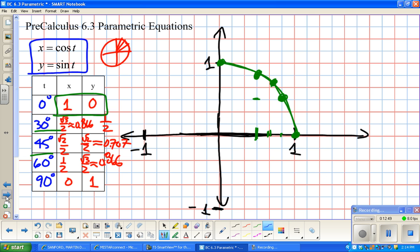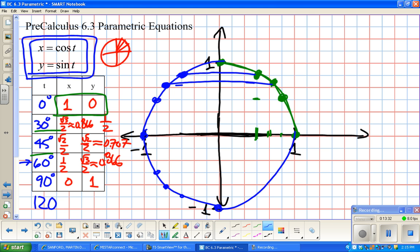Now, if I keep going to like 120, the reference angle is going to be 60. So it's going to have the same values as this point, somewhere around here. If I go to 135, it's going to have the same values as this point, only the x value will be negative, so somewhere around here. And same idea for the next one, and the next one. What I'm hoping you're seeing here is, ultimately, the graph of this is really just the unit circle.